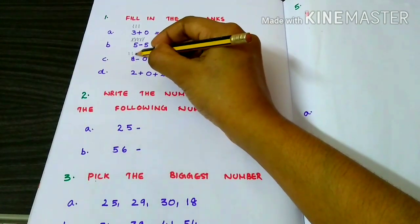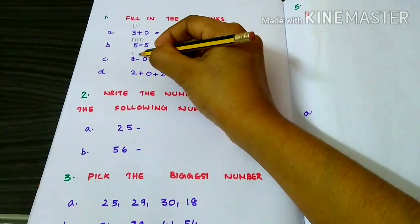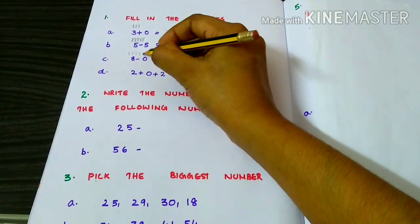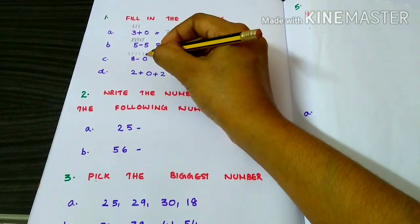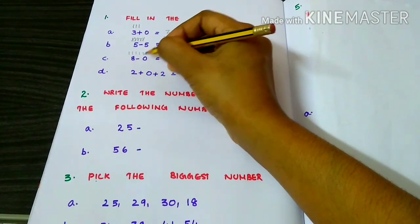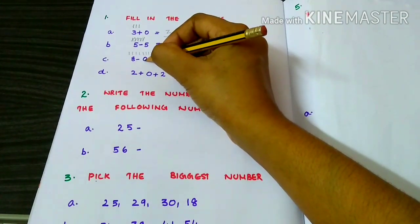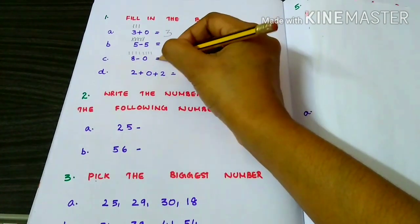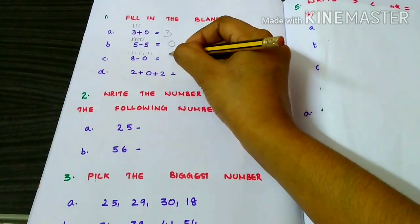Counting 2 through 8. 8 minus 0 equals 8.